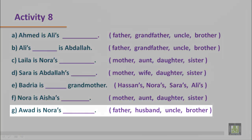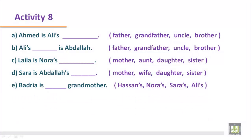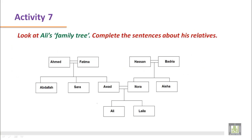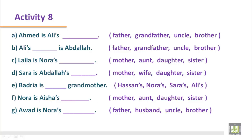Sentence G: Awad is Nora's — father, husband, uncle, or brother. Let's look at the family tree again. What's the relationship between Awad and Nora? Here is Awad and here is Nora. We understand that they are husband and wife. The correct answer: Awad is Nora's husband.